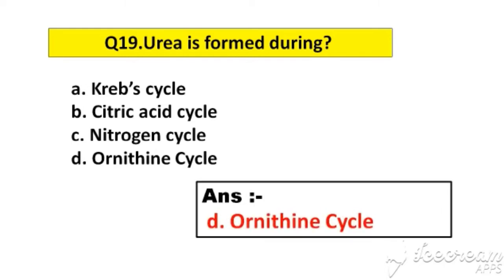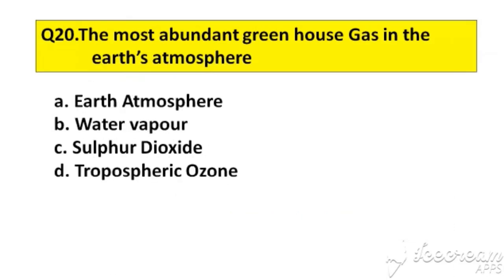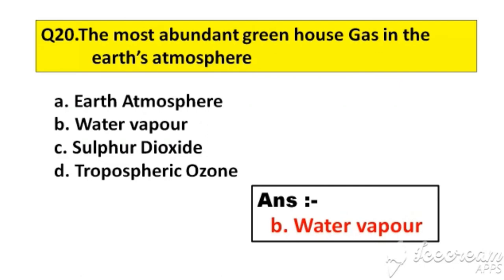Question number 20. The most abundant greenhouse gas in the Earth's atmosphere. Option A: Earth's atmosphere. B: Water vapor. C: Sulphur dioxide. D: Tropospheric ozone. The right answer is option B, Water vapor.